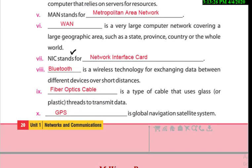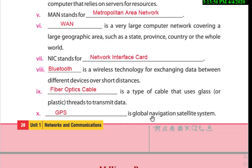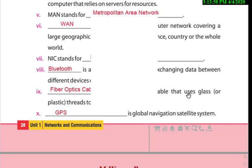NIC stands for Network Interface Card. Bluetooth is a wireless technology for exchanging data between different devices over short distances. Fiber optic cable is a type of cable that uses glass or plastic threads to transmit data. GPS means Global Positioning System, which is a global navigation satellite system.